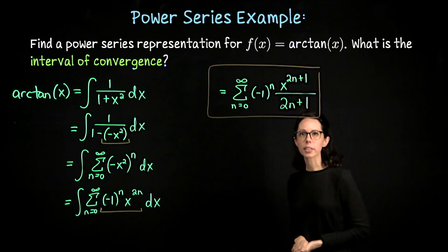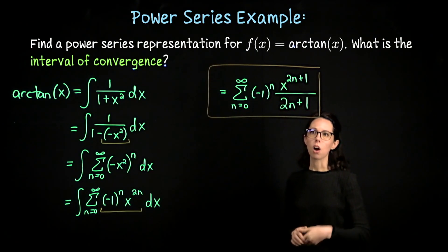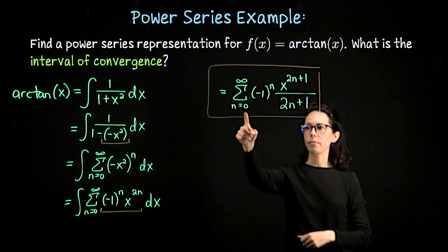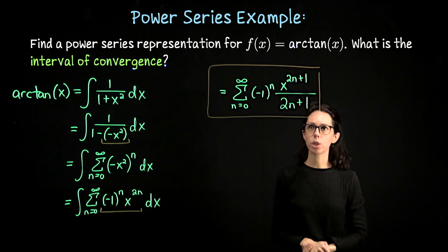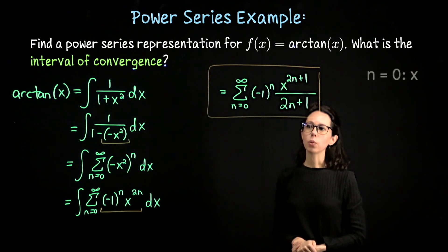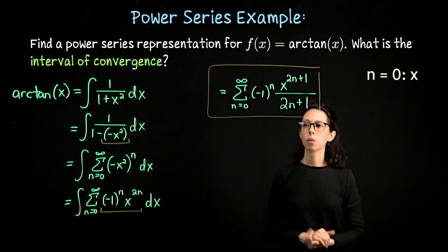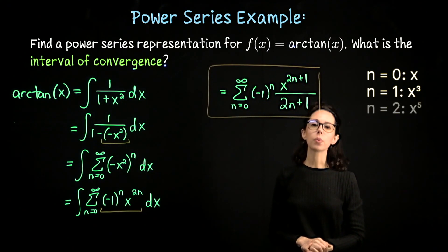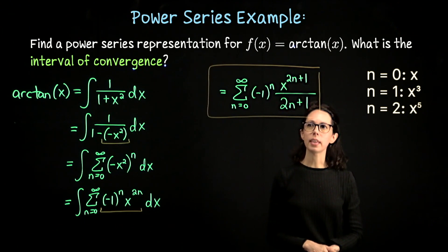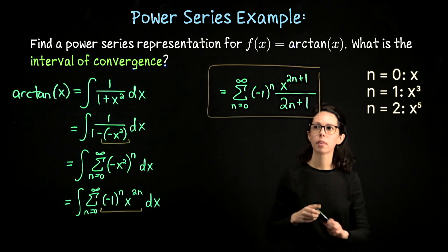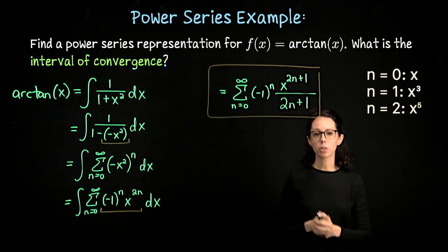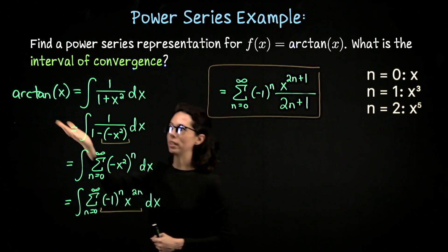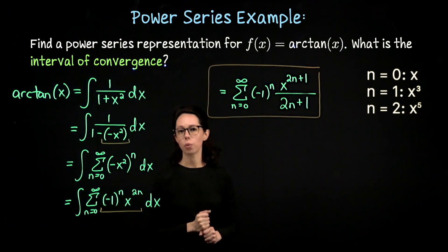Let's make a couple of remarks about it. Notice that all of the powers on x are odd. If I start plugging in values for n and look at the numerator x to the 2n plus 1: when n equals 0 that's x; when n equals 1 it's x cubed; when n equals 2 it's x to the fifth. So all terms have odd powers, making this an odd symmetric expression, which matches the property of arctan of x — arctan of x is also odd symmetric.